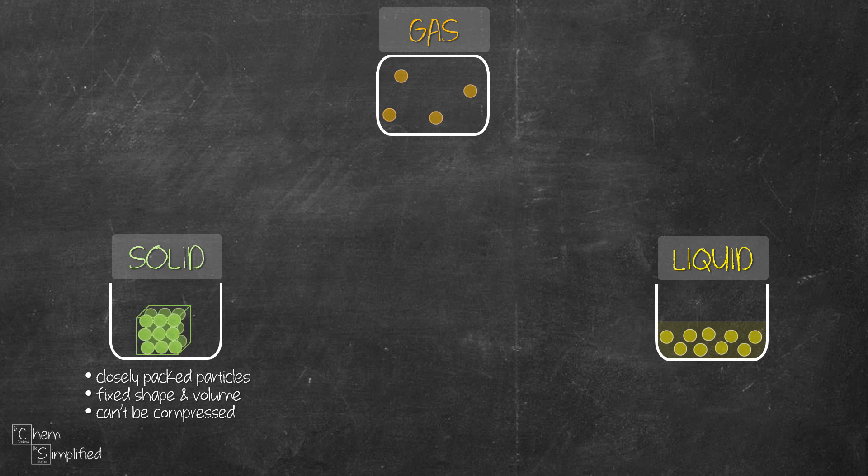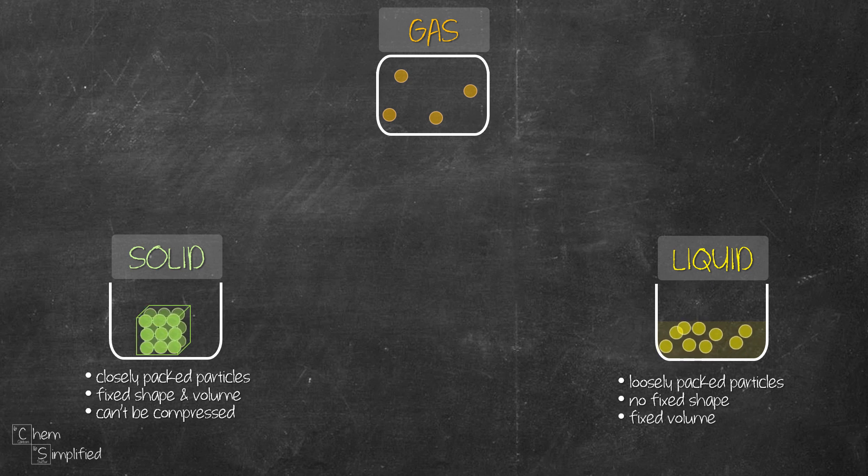Next, we move on to the second state of matter, which is liquid. Liquid's particles are loosely packed compared to solid. That's why they do not have a fixed shape and take on the shape of the container. However, since liquid has fixed volume, it will only fill up the container up to the volume of the liquid.